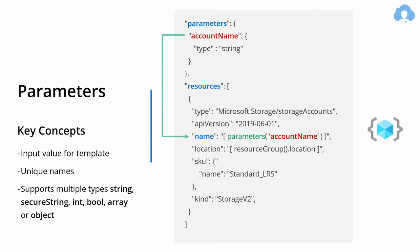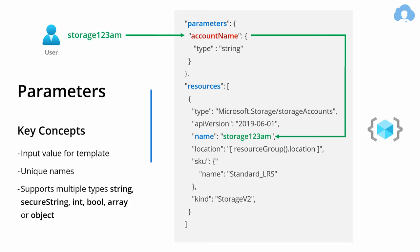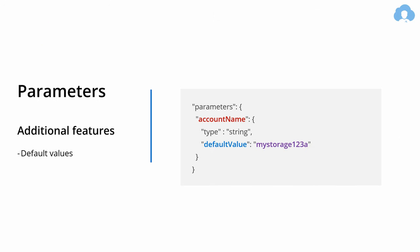During deployment, if a user passes 'storage123' as a parameter, Azure Resource Manager will use that value and put it in the right place wherever you defined it in your template. The idea is simple — so what additional features do you get? First of all, you can define default values. If a user doesn't specify an account name during deployment, a default value like 'mystorage123' will be used automatically.